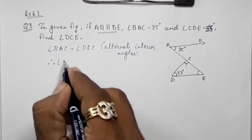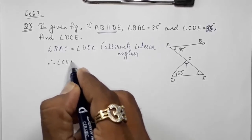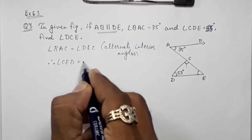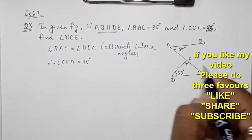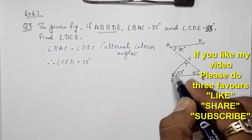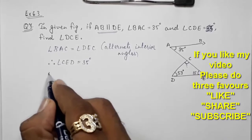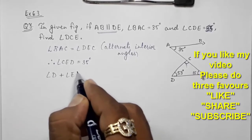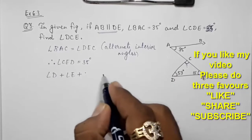Therefore, angle CED or DEC will be equal to 35 degrees. Now we know the sum of all the angles: angle D plus angle E plus angle DCE is equal to 180 degrees.